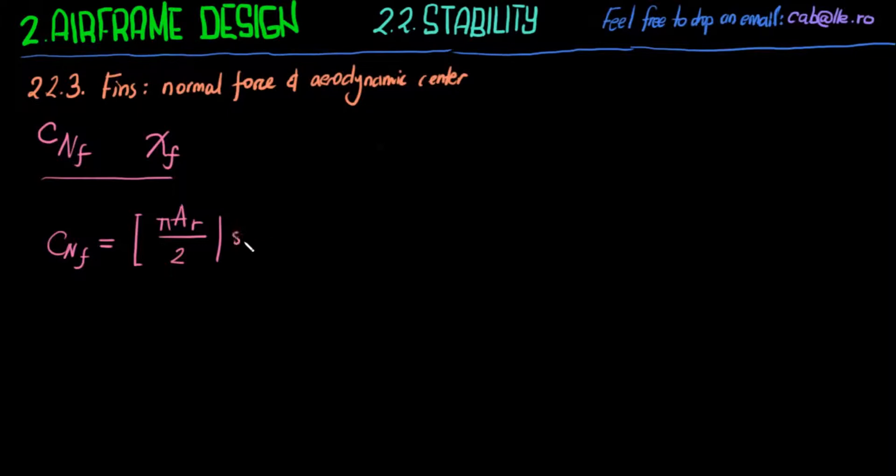Normal force coefficient of fins. The sine of alpha times cosine of alpha absolute value plus 2 times sine squared of alpha times this. I'm going to explain what this is.